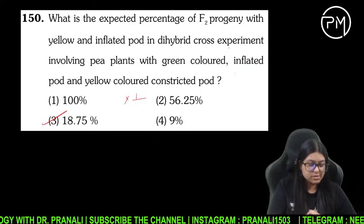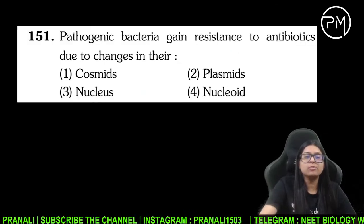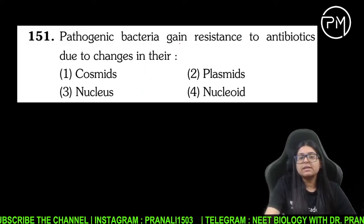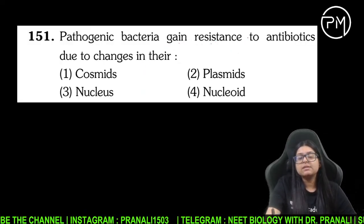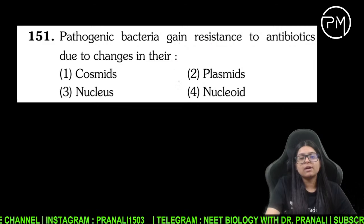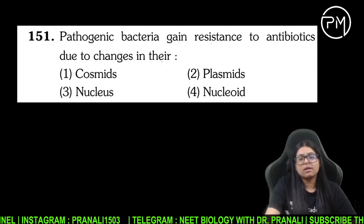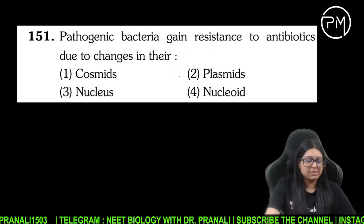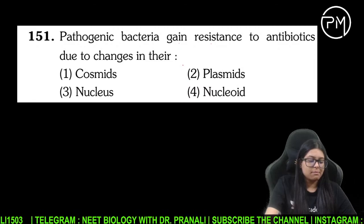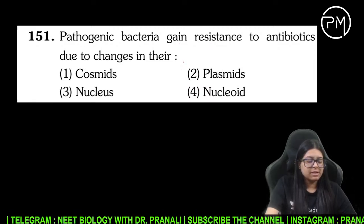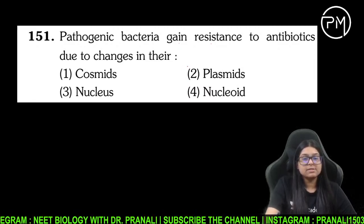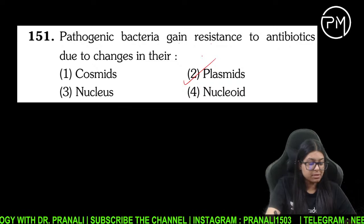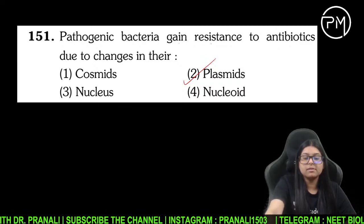Pathogenic bacteria gain resistance to antibiotic due to change in their plasmids — plasmid mein rehta hai na antibiotic resistance gene, hamne biotech mein bhi padhaaya hai, cell chapter mein bhi padhaaya.